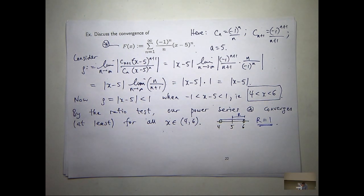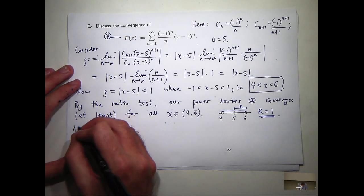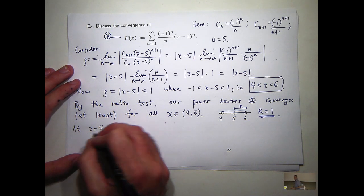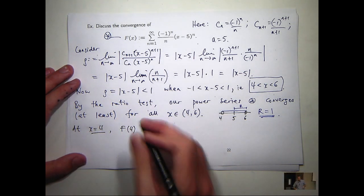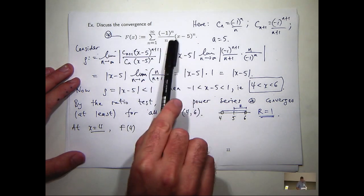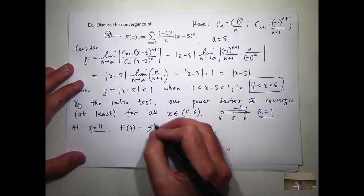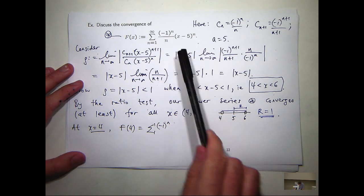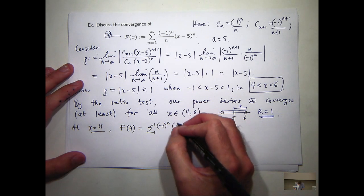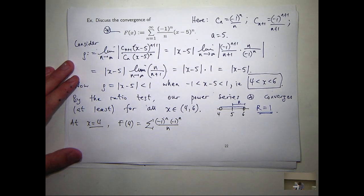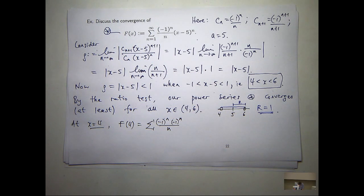Now, what happens at x equals 4? What happens? Well, let's find out. So, let's go up here. Plug in x equals 4. So, this is one time when we do have to actually just sub in. So, that's going to be minus 1 to the n all over n. All right. What's going to happen to these two things? Well, it's a square, so they're just going to go to 1.